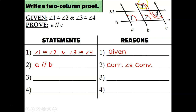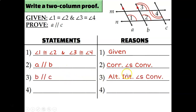Now let's examine angle three and angle four — they would be alternate interior angles. They're on opposite sides of transversal M, and they're in between lines B and C, which makes them alternate interior. Since I have alternate interior angles that are congruent, I can conclude that line B and line C are parallel because of the alternate interior angles converse.